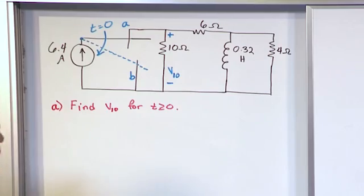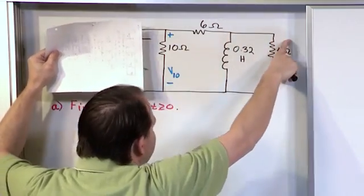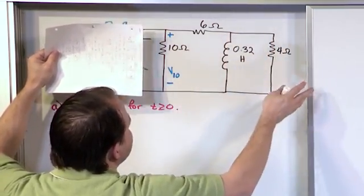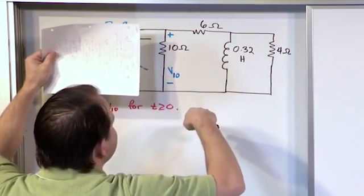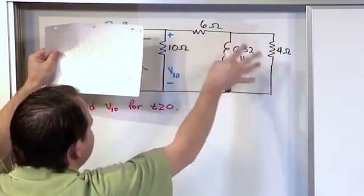What makes this a little bit unique is that whenever we open the switch, in the previous circuits we have like one inductor with one resistor. And so it was easy to figure out the time constant and all that, but now when we open the switch we've got actually multiple resistors and also they're not really like together. They're a little bit spread on either side of the inductor.